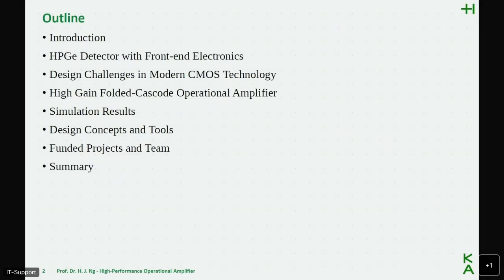So this is the outline of my talk. In the introduction, I will present the system application of the so-called HPGE detector that can be used for the detection of radiation. We will see that this detector needs very accurate front-end electronics. After that, I will talk about the design challenges in modern CMOS technology nodes. I will show you some of our proposed circuit architectures and show you also some simulation results. And then I will talk about our typical design concepts and what we are using for the chip design. And then this is an add-on. I will also show you some of our current science-funded projects and the teams that are working in the project. And then I will end my talk with a short summary.